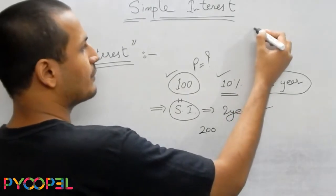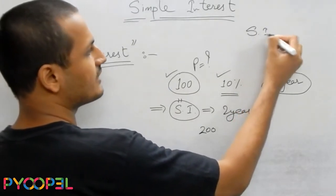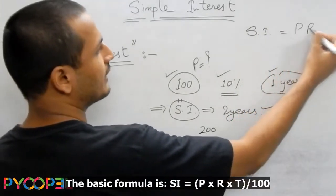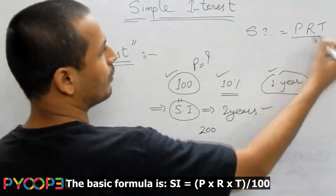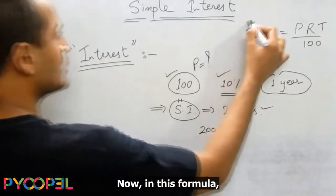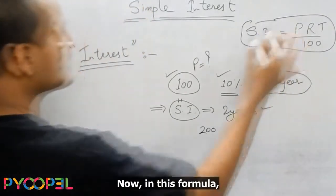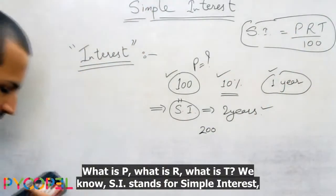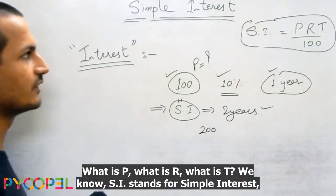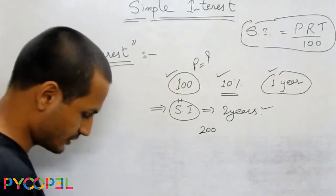The basic formula is: SI is equal to P times R times T, upon 100. In this formula, SI stands for simple interest, and we need to understand what P, R, and T represent.